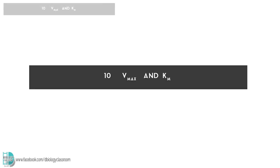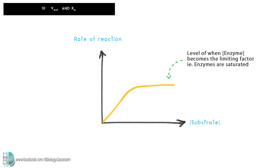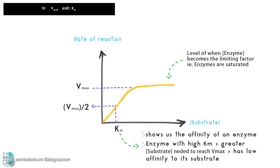Number 10, the Vmax and Km. As substrate concentration increases, the rate of reaction increases until the enzymes are saturated with the substrate. The maximum rate of reaction is the Vmax. Km is the concentration of substrate which permits the enzyme to achieve half of Vmax. It shows us the affinity of an enzyme to its substrate. An enzyme with a high Km requires a greater concentration of substrate to achieve Vmax, so it has a low affinity.